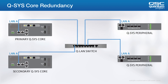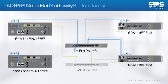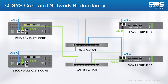Q-SYS core redundancy is fairly simple to plug in. As shown in this diagram, the LAN A connections of each Q-SYS device are connected to the QLAN network. LAN B is needed only if a secondary network is being used. Here's a diagram of redundant cores used in conjunction with network redundancy.